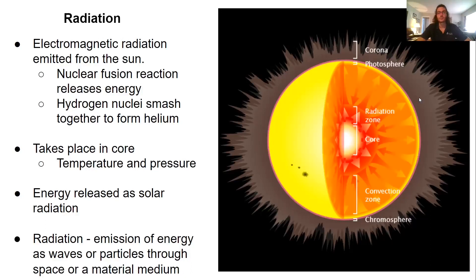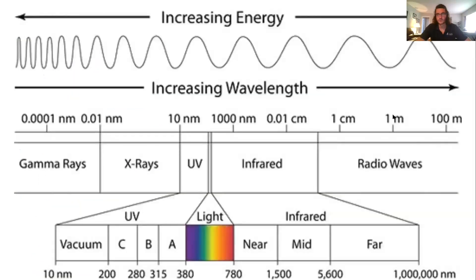Essentially, radiation in general is the emission of any type of energy in the form of waves or particles through a space or material medium. In this case, that solar radiation is going to be released through space and it's going to have to travel through different layers before it even reaches Earth. But essentially, that's what solar radiation is, and then we can talk about the different forms.